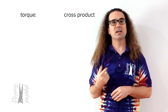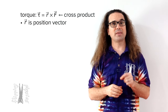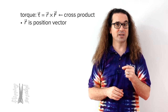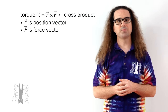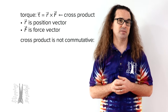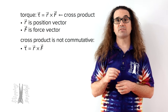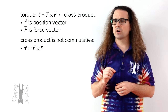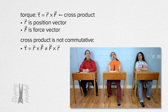Torque, as a vector, equals the cross product of r — the position vector from the axis of rotation to the point where the force acts on the object — and F, the force causing the torque. Please realize the cross product is not commutative. In other words, torque equals the cross product of the position vector and the force; however, torque does not equal the cross product of the force and the position vector.